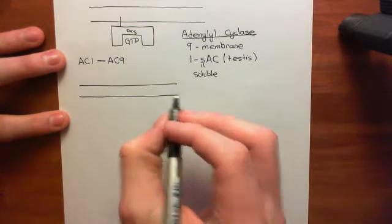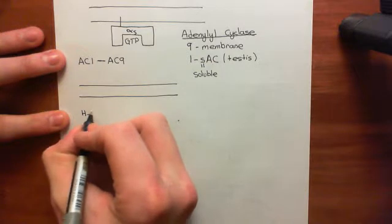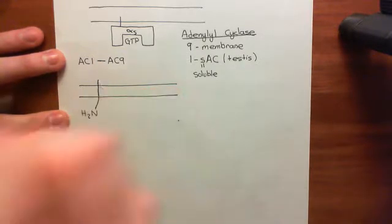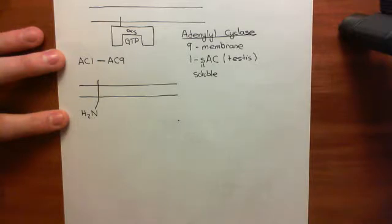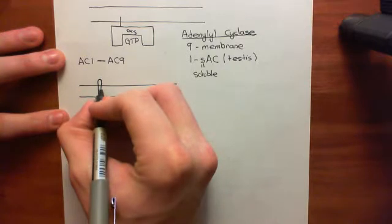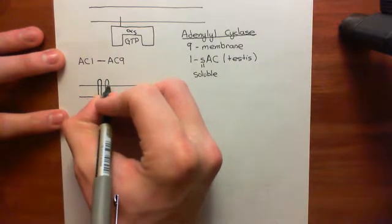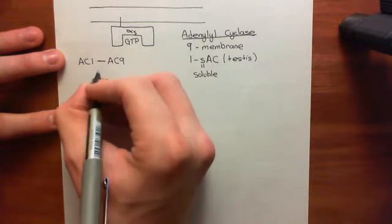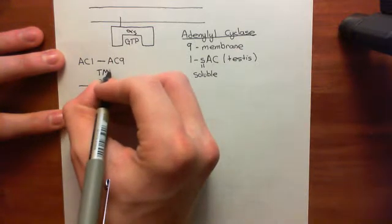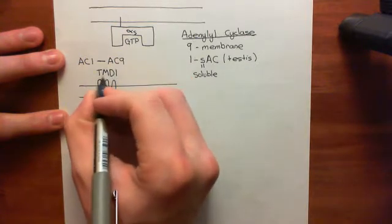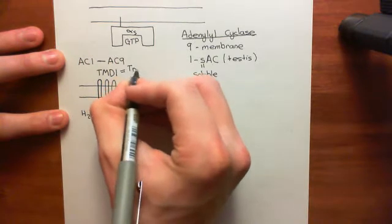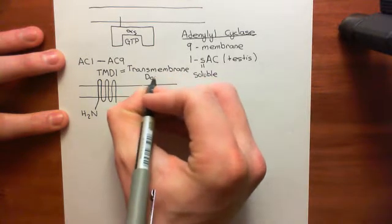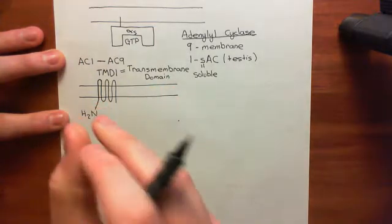Adenylyl cyclase enzymes are all a single polypeptide, and the amino terminus of this polypeptide is intracellular. It then has its first membrane-spanning alpha helix. Adenylyl cyclase structure has two clusters of six membrane-spanning alpha helices. The polypeptide continually spans the membrane to make a cluster of six membrane-spanning alpha helices — this cluster is known as transmembrane domain 1, or TMD1. TMD1 stands for transmembrane domain, the first transmembrane domain, a cluster of six membrane-spanning alpha helices that all cluster together.